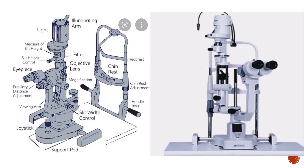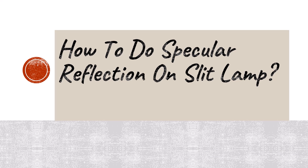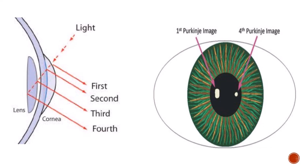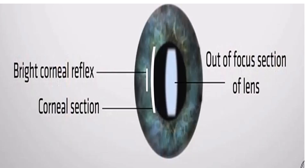Before going into how to perform specular reflection, it is important to know the parts of the slit lamp — it is advisable to pause the video and review them. To understand how to perform specular reflection, you need a basic idea about Purkinje images. These are the reflected images of the illuminating system's bulb on the cornea. The first Purkinje image comes from the anterior cornea, the second from the posterior cornea, the third from the anterior lens surface, and the fourth from the posterior lens surface.